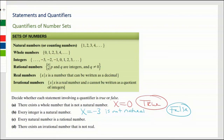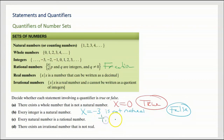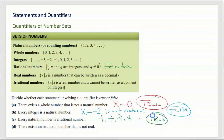Next: 'Every natural number is a rational number.' Natural numbers are 1, 2, 3, 4, 5... Rational numbers are fractions. Are natural numbers fractions? Well, 1 can be written as 1/1, 2 as 2/1, 3 as 3/1, 4 as 4/1 — or even 8/2. Every natural number is definitely a rational number. So this is a true statement, because we are able to write every one of them as a fraction.